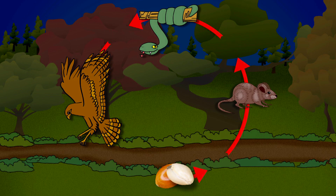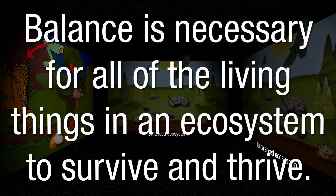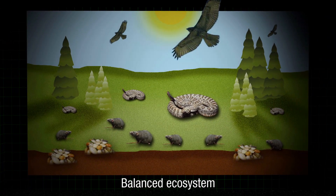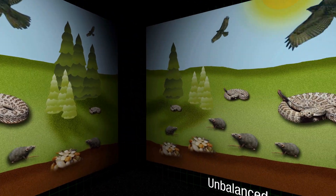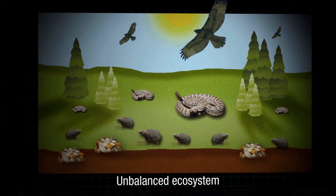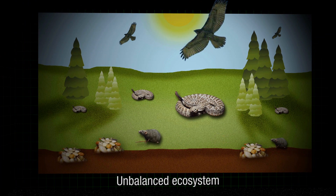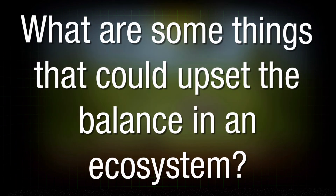All of the living things in this food chain depend on another thing. Balance is necessary for all of the living things in an ecosystem to survive and thrive. A balanced ecosystem has the same population of living things over time. This ecosystem is out of balance because the mouse population has decreased.